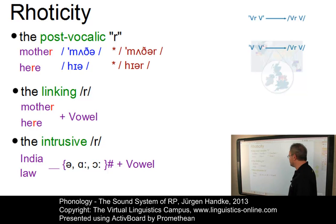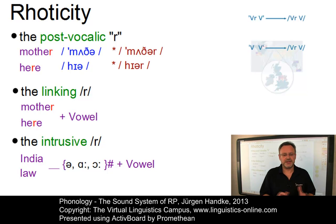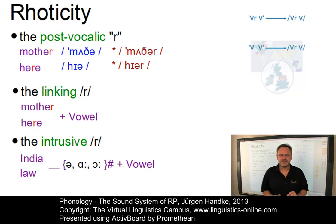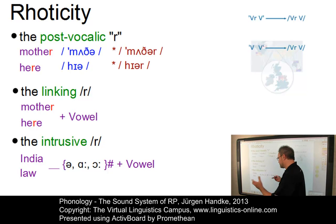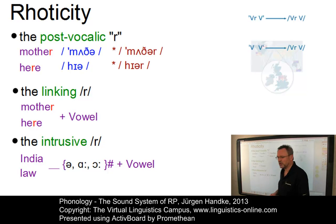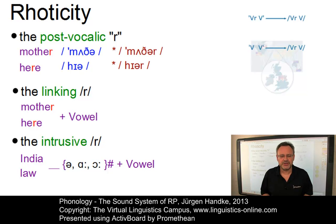The second case is the intrusive R, which is clearly confined to RP. Here, the phoneme R can be inserted between two vowels even without orthographic representation, provided the final vowel of the first word is a low back vowel or a schwa. So 'India' and 'law' become 'India and China' or 'law and order' when followed by a vowel-initial word. In summary, RP is not totally non-rhotic, but very low on the scale of rhoticity.